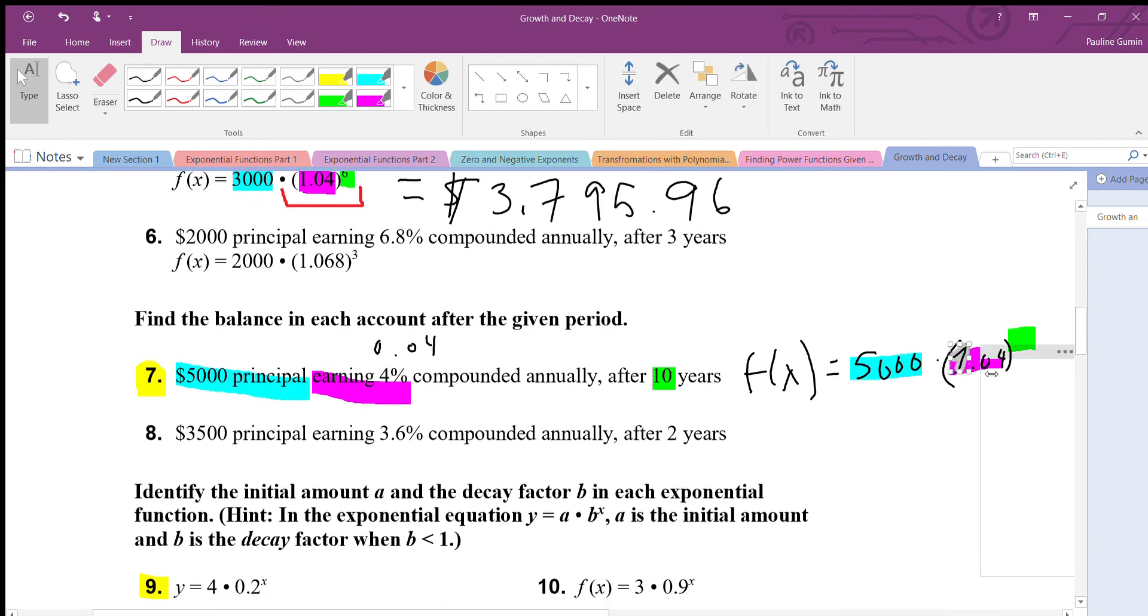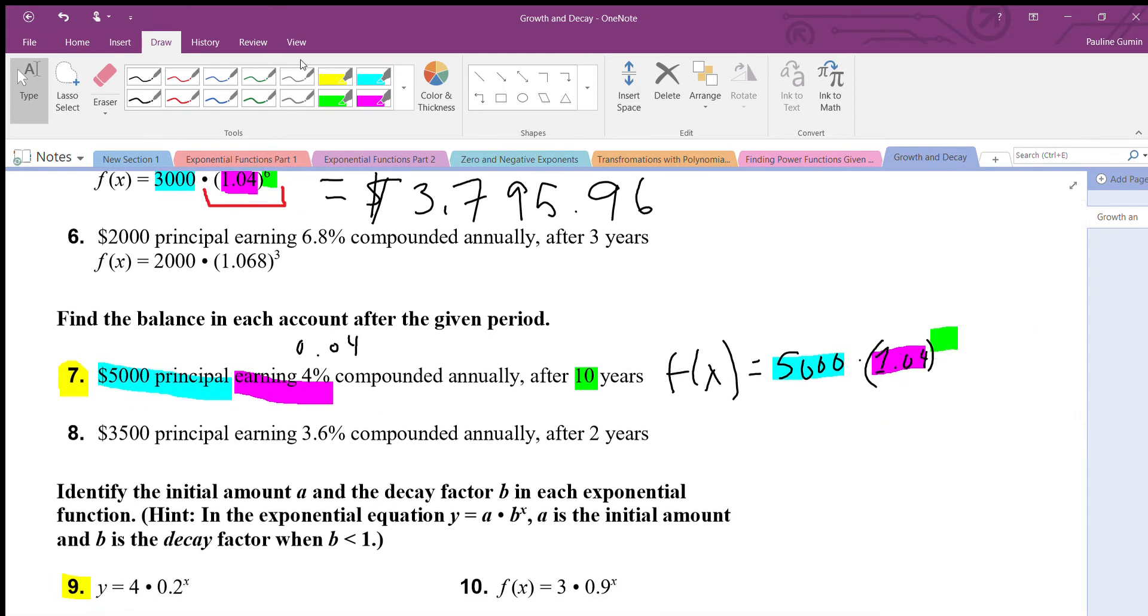Now this is going to go into your calculator. What you want to do is make absolutely sure that the first thing you calculate is this, then you multiply by five thousand. What I got for my answer is seven thousand four hundred one dollars, I'm going to round the cents to twenty two.